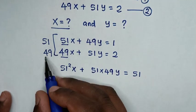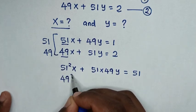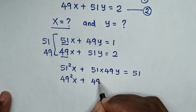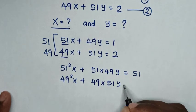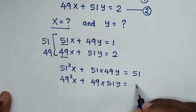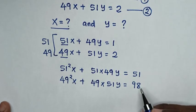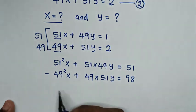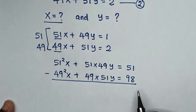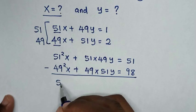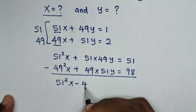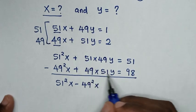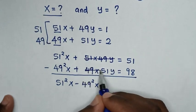Then, 49 squared x plus 49 times 51y is equal to 98. Then, in the next step, we take the first equation minus the second equation. So it will be 51 squared x minus 49 squared x, and the y terms cancel each other.